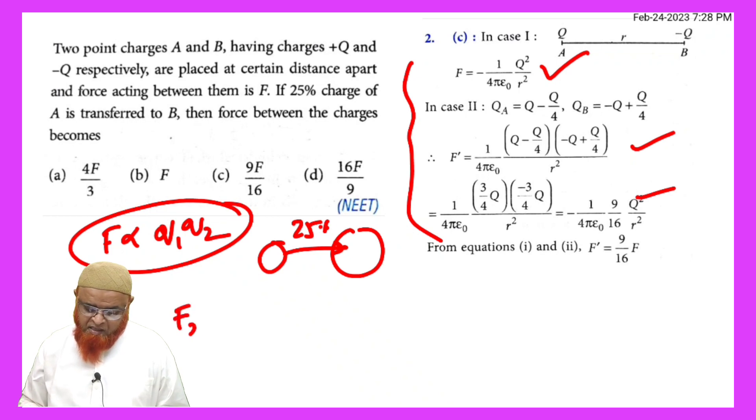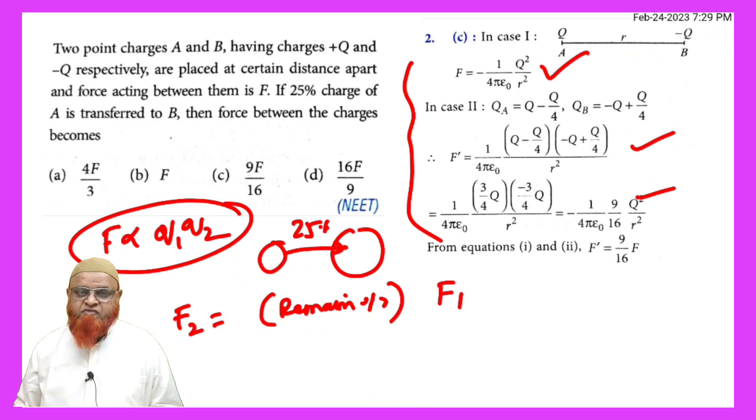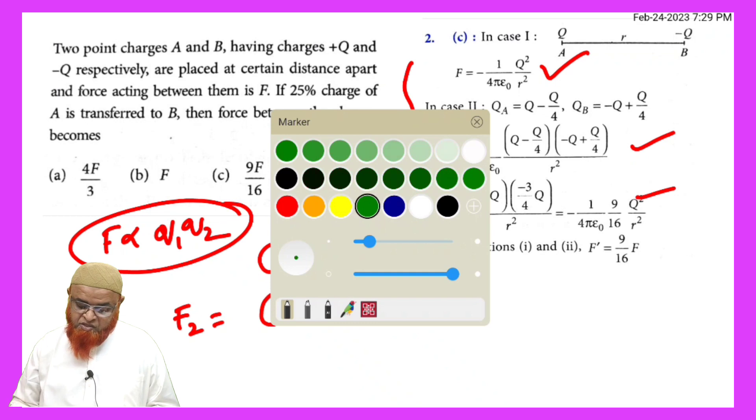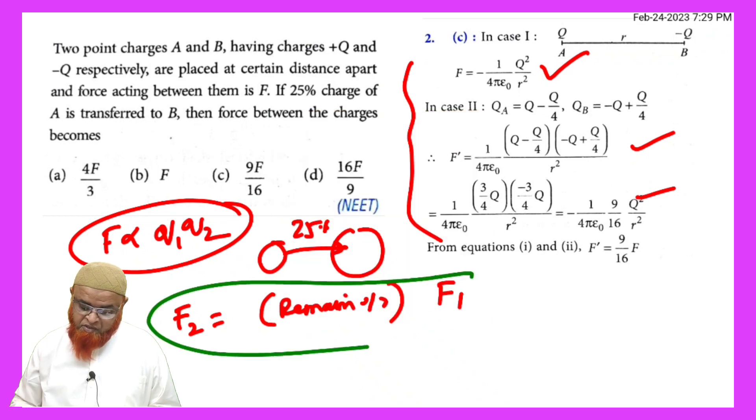But I will tell you one shortcut that F2 is equal to remaining percentage into F1. So this is a shortcut formula. We can use this shortcut formula to solve this problem. So this is going to be a shortcut.